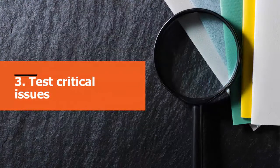Step three is to test critical issues. One of the things we found early on is that there are a whole lot more traps on mobile devices than on desktop. A trap is where a user is trapped within a component and cannot escape without closing the browser or the app — think of 2012 Firefox video players where people would tab into the video player and couldn't tab out. We identified things as traps where the only way to escape is to close the browser or the native app.